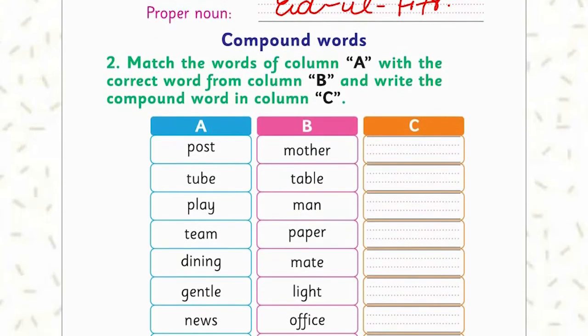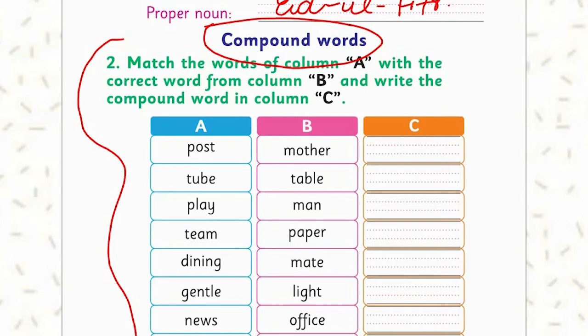Now let's do the compound words. What are compound words? When we join two words together, it is called a compound word. The two different words join together and they convey a different, new meaning. We have studied compound words in previous lessons in Units 2 and 3. Now let's do the exercise: match the words of Column A with the correct word from Column B and write the compound word in Column C.